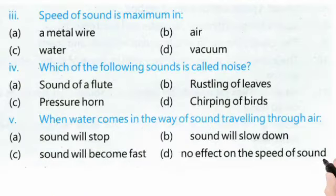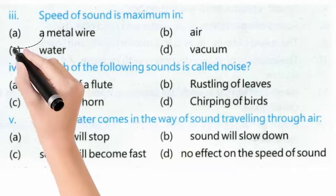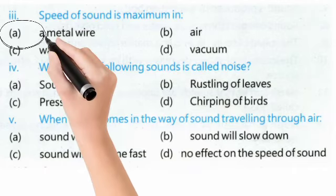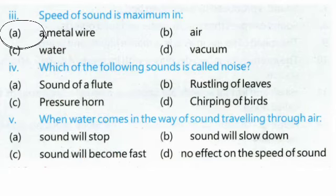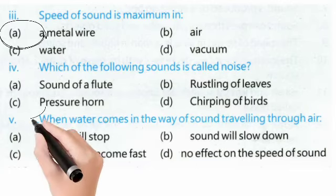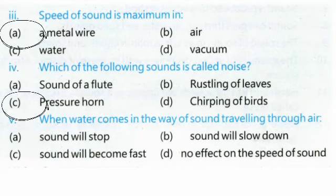Question 3: Speed of sound is maximum in — a) a metal wire, b) air, c) water, d) vacuum. Correct option is A — a metal wire. Question 4: Which of the following sound is called noise? a) sound of a flute, b) rustling of leaves, c) pressure horn, d) chirping of birds. Correct option is C — pressure horn.